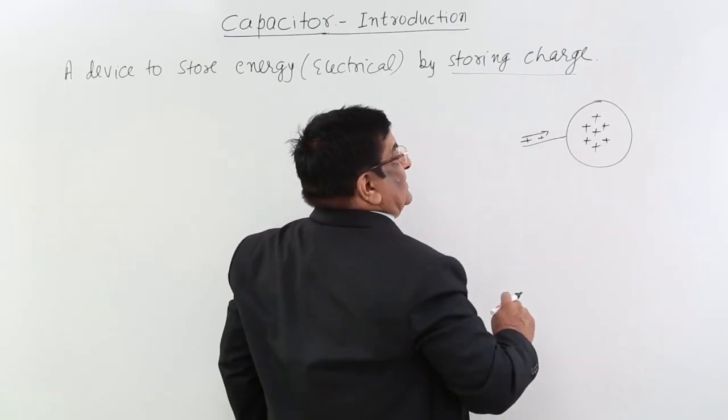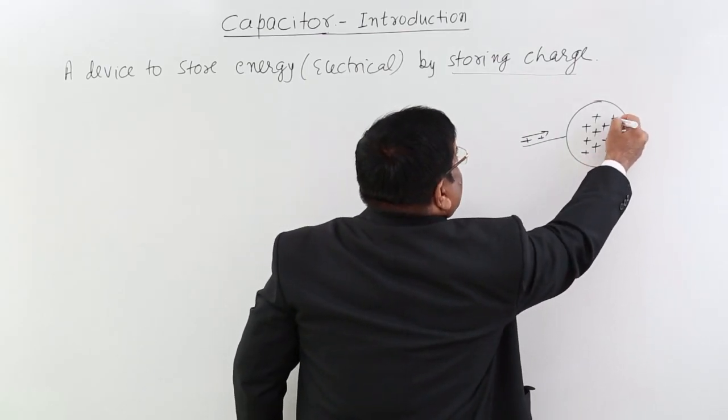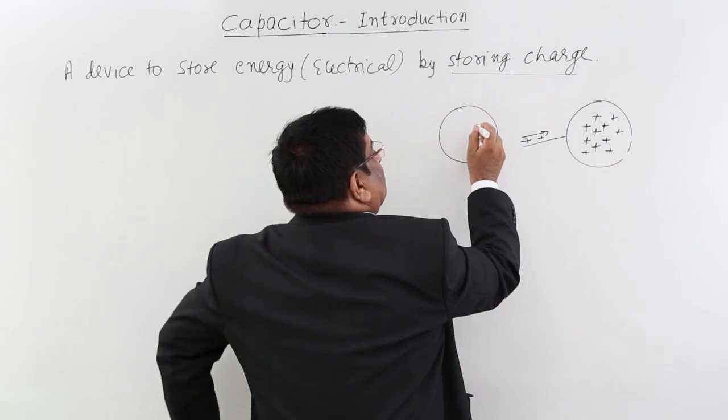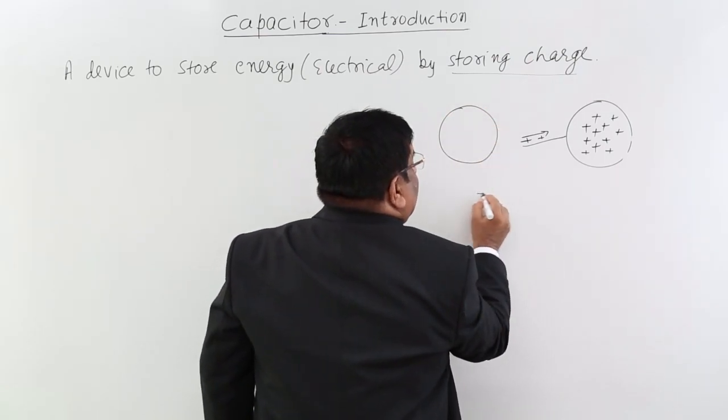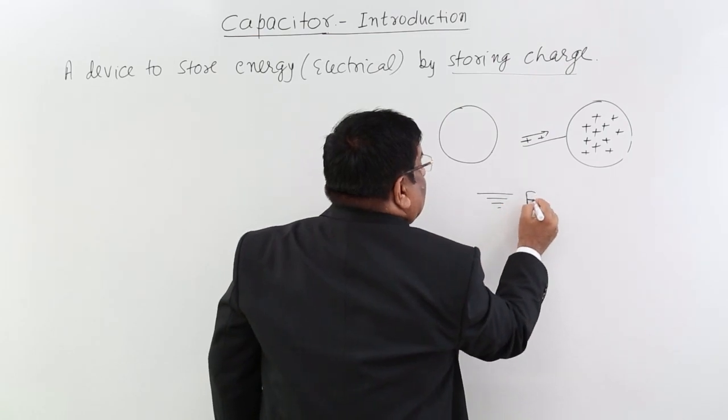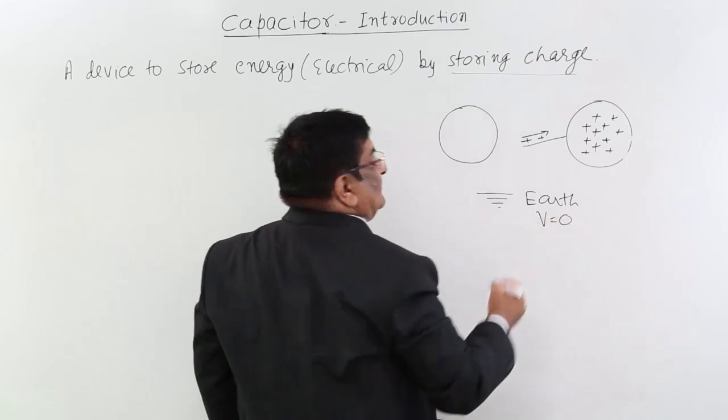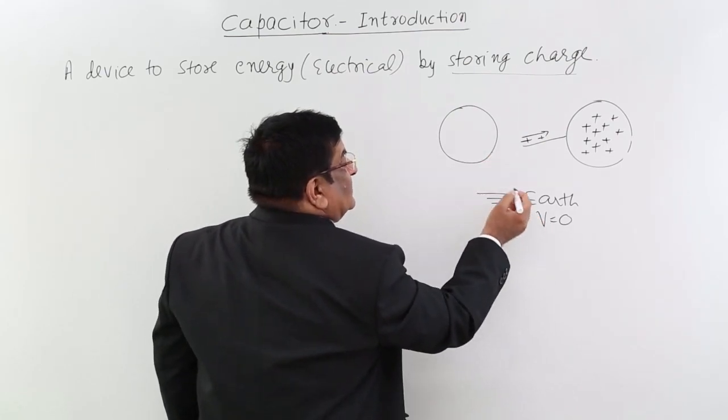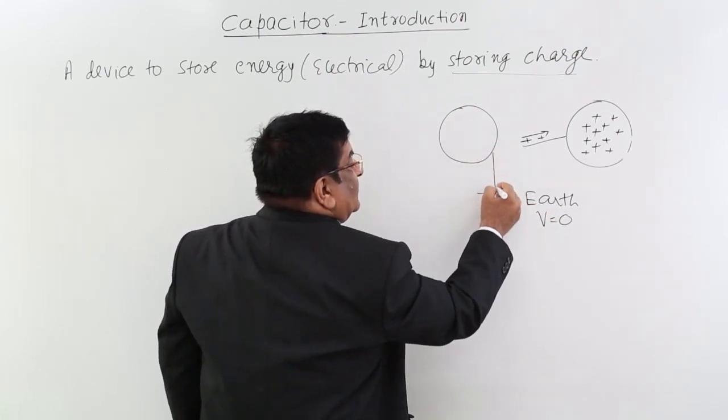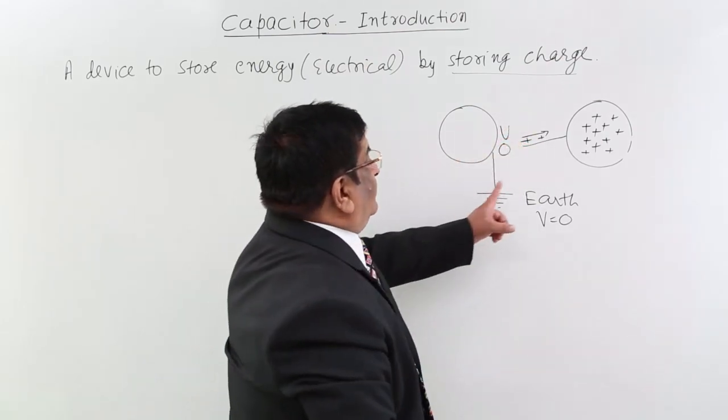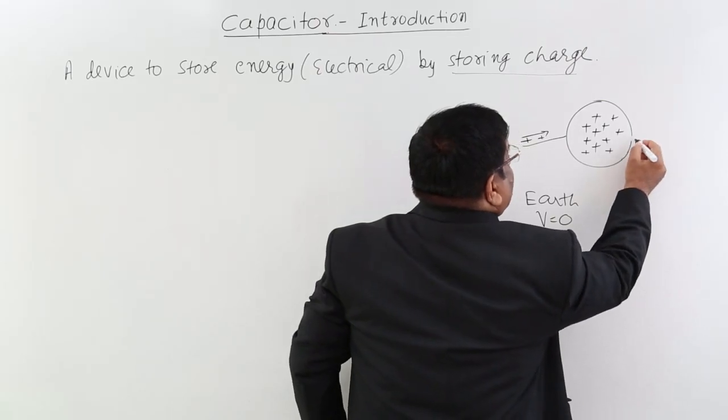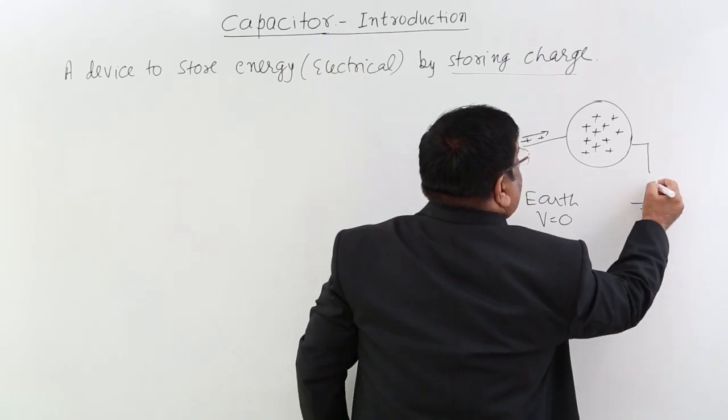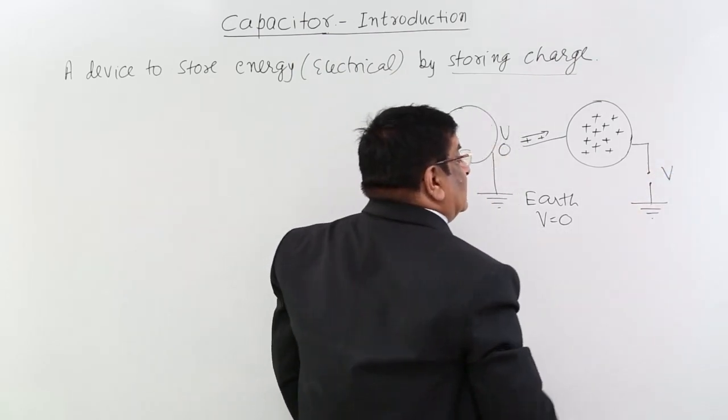Now another thing happens. When we place charges here on this metal, a lot of charge is there. Initially when there was no charge, its potential difference with reference to Earth - for Earth we take as potential 0, for infinity potential 0, for Earth potential 0. So with reference to Earth, its potential difference was 0. Now when I see the potential difference between this body and Earth, now I find it has gained lot of potential.